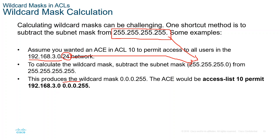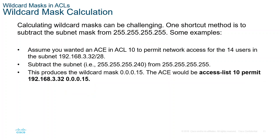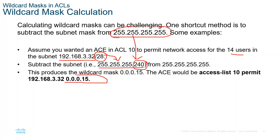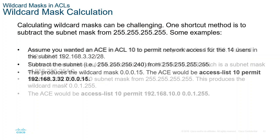To calculate the wildcard mask, you take 255.255.255.255 (all binary ones) and subtract the subnet mask. The result is the wildcard mask. For example, 255.255.255.255 minus 255.255.255.0 gives 0.0.0.255. This is the simplest shortcut method to determine the wildcard mask.